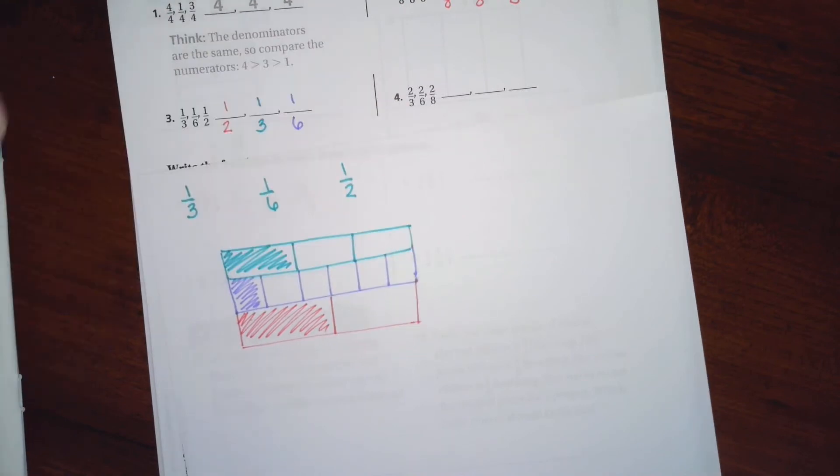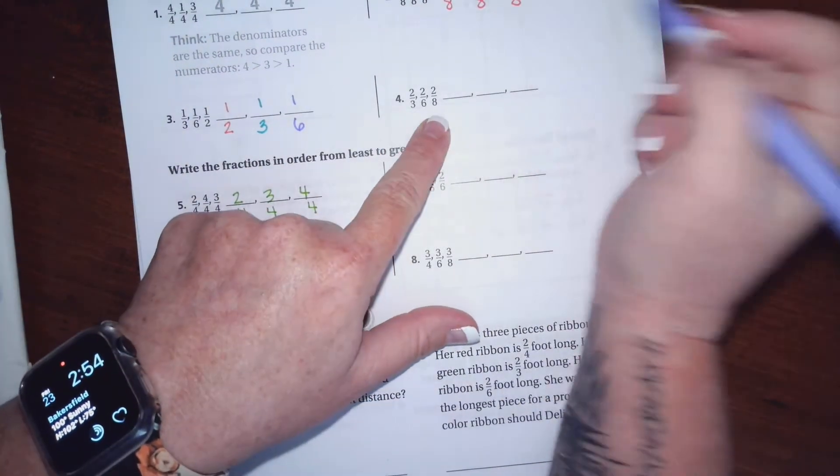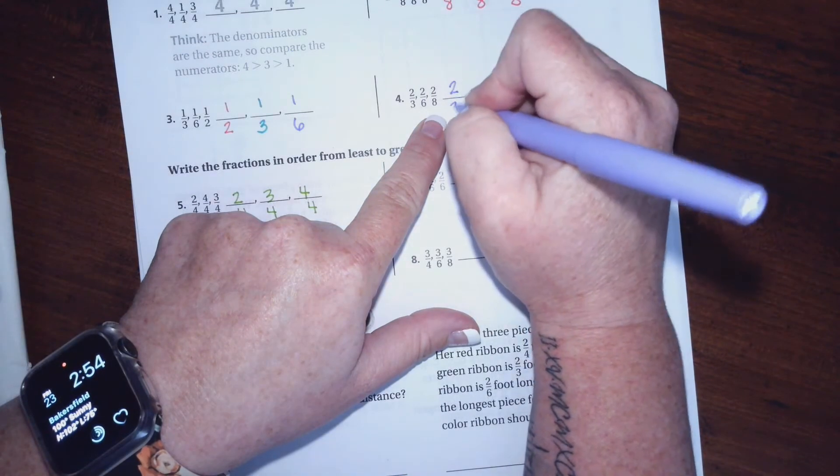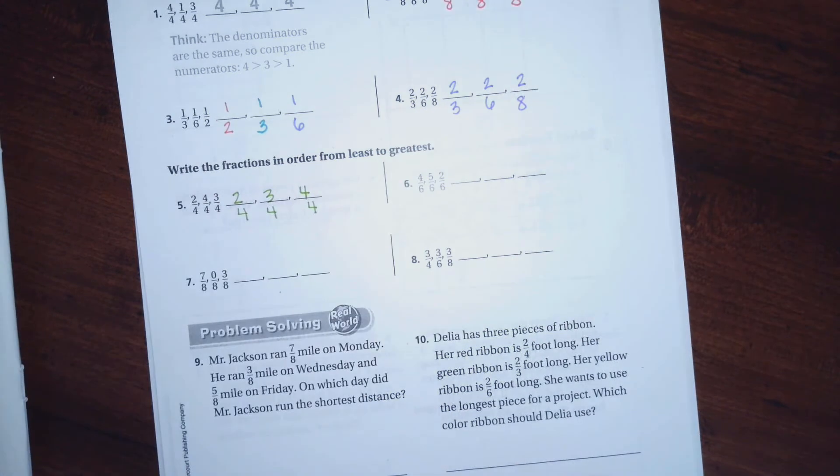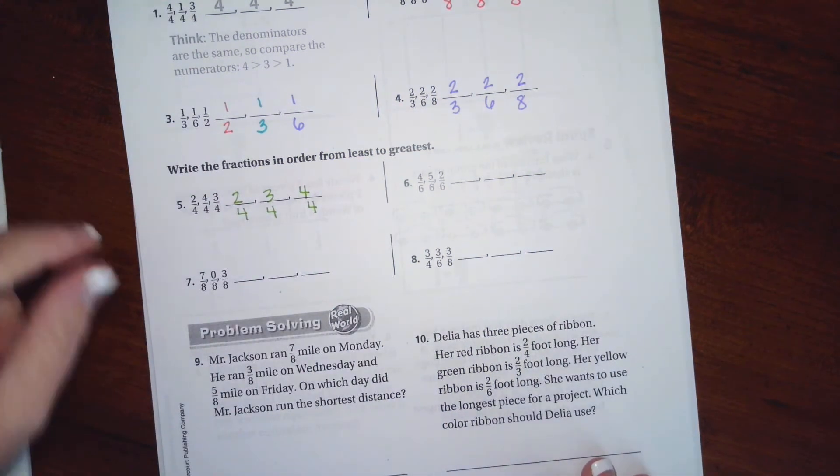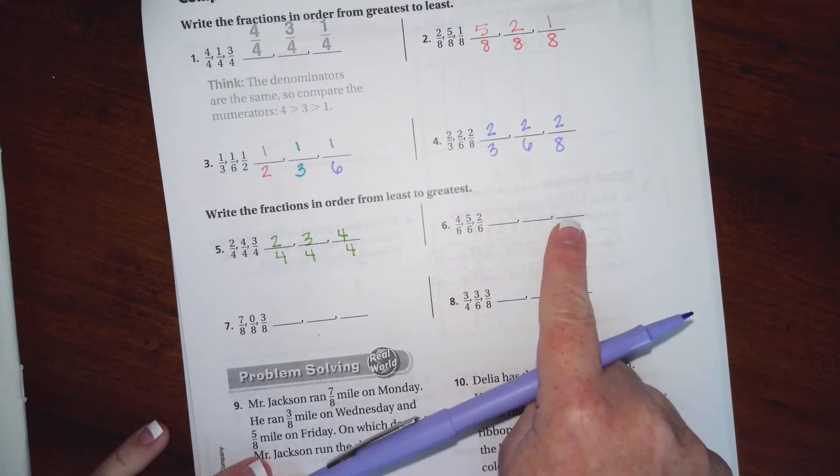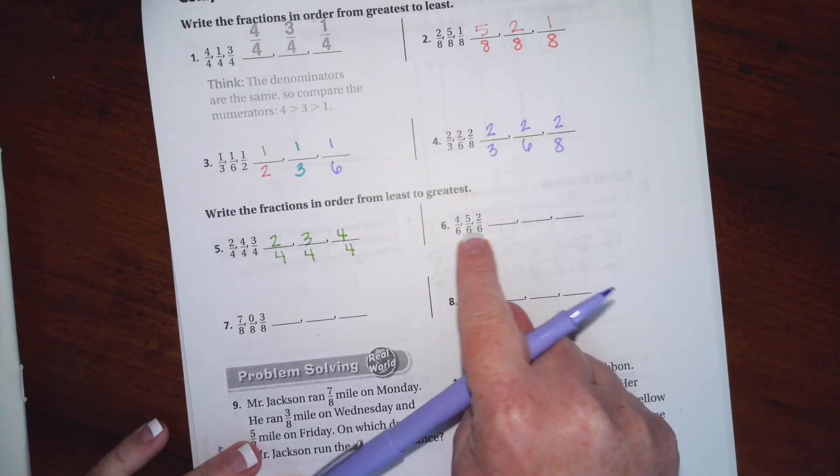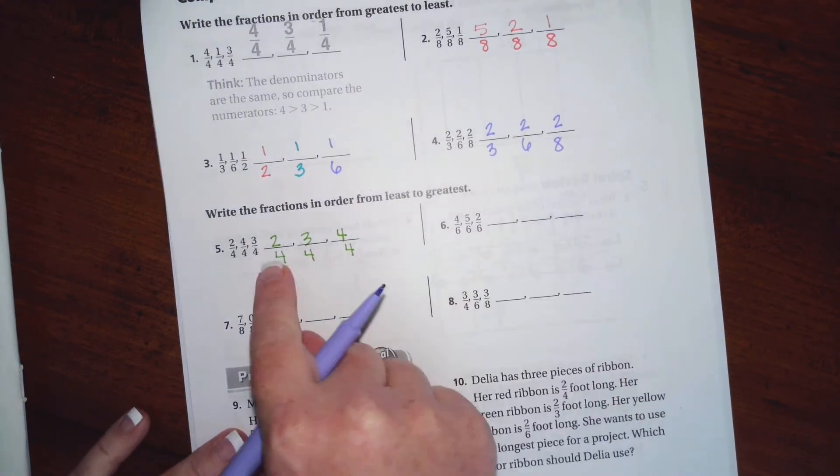Then we're going to write in one third, then we're going to write in one sixth. Notice over here all the top ones are the same, so we're going to do the same thing, which means that the smallest bottom is going to be the largest. So this one's the opposite, so you're just going to write them in backwards.